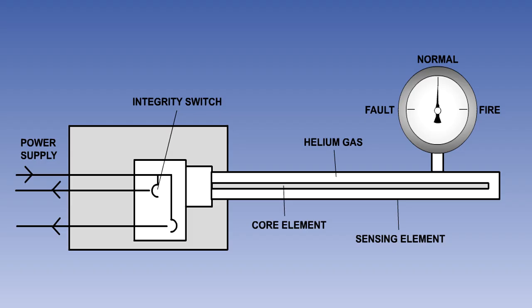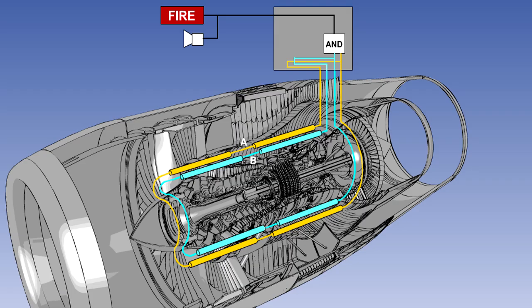To aid explanation of the gas-filled detector type of system, we have included a pressure gauge. This gauge is not fitted on aircraft detection systems. The pressure in the tube is monitored by two pressure switches. One is closed at the tube's normal pressure. This is known as the integrity switch. The other, which is open at normal pressure, is known as the alarm switch. As with fire wire, the detectors are positioned around the fire zones in a double loop, with both loops again being required to detect a fire before a fire warning is given.